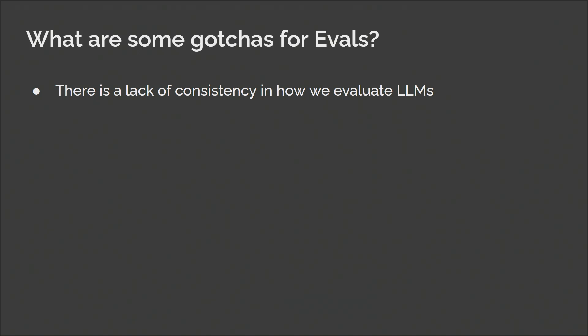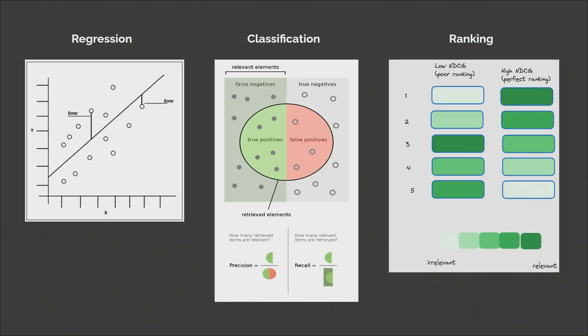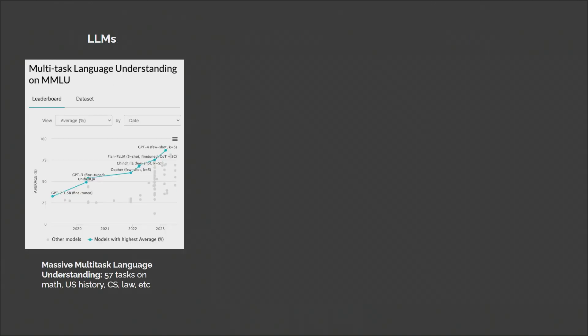But building evals is hard. Here are some things I've seen folks trip up on. Firstly, we don't have a consistent approach to evals. If you think about more conventional machine learning — regression, we have root-mean-square error; classification, precision and recall; even ranking, NDCG. All these metrics are pretty straightforward, and there's usually only one way to compute them.